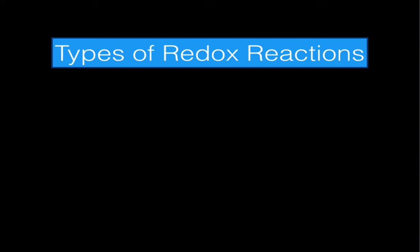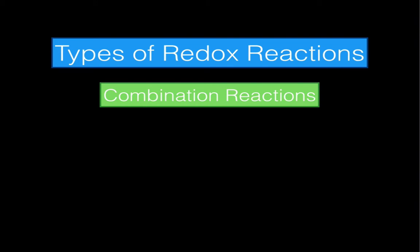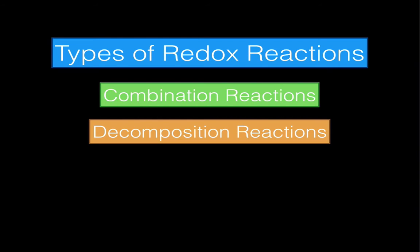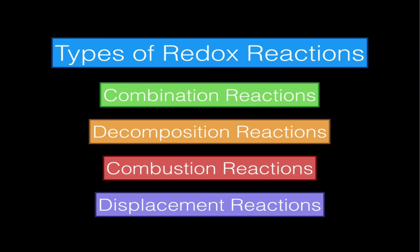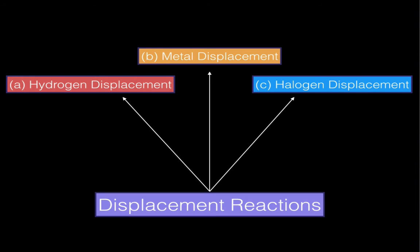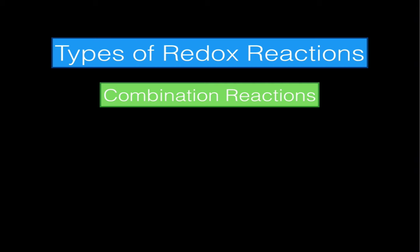Welcome to another chemistry video. In this video we're going to be discussing the different types of redox reactions: combination reactions, decomposition reactions, combustion reactions, and finally displacement reactions. Displacement reactions break up into three different types, which we'll discuss in a separate video. So let's take a look at the combination reaction.